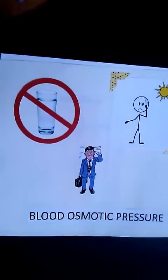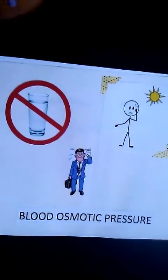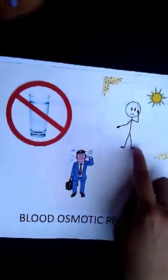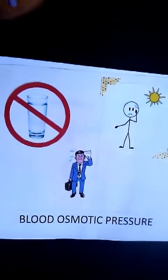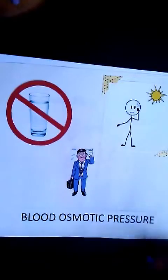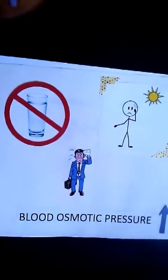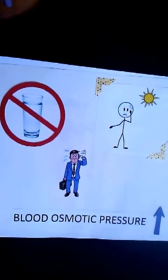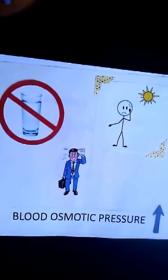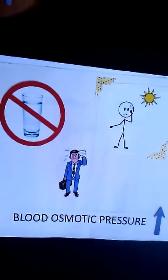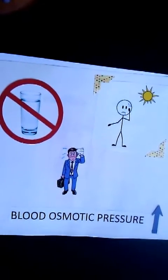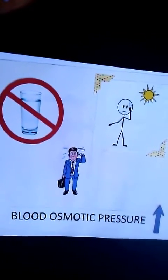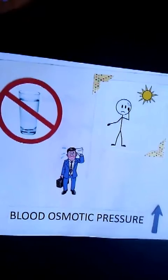When blood plasma becomes too concentrated — for example, from dehydration, lack of water intake, or sweating — your blood osmotic pressure increases. As a result, water moves into the bloodstream, causing the cells of the hypothalamus to shrink. The osmoreceptors detect this change and send impulses to the pituitary gland, which causes a release of ADH into the blood.